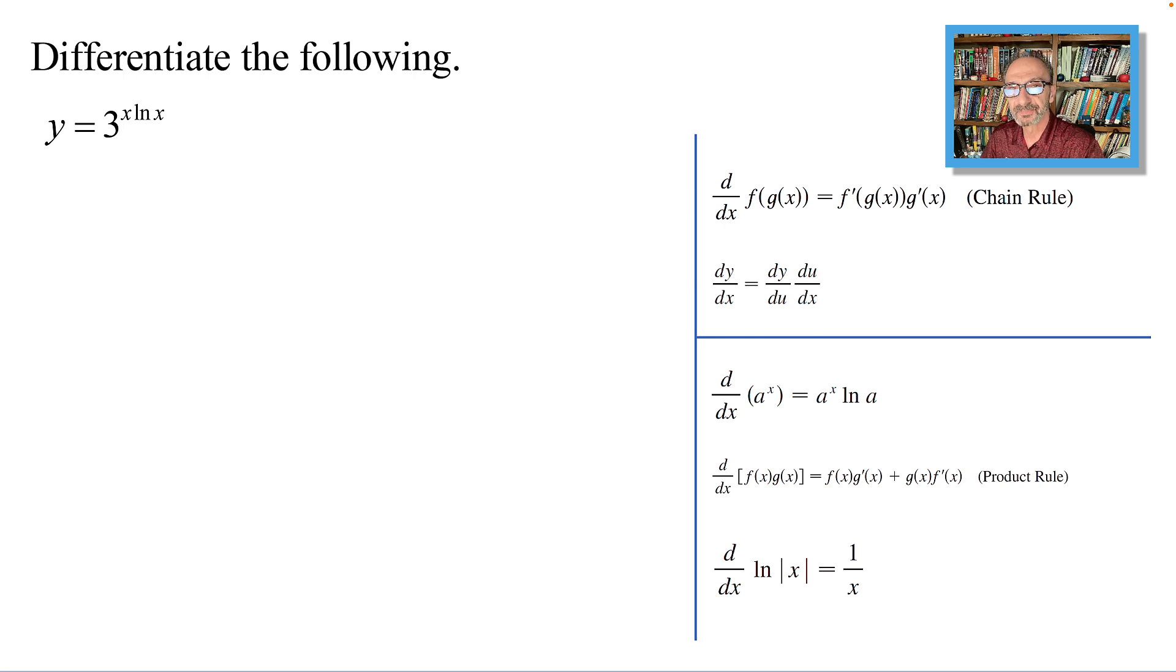Let's get started to differentiate y equals 3 to the power x ln x. In this case, it's considered as a to the u, so we need to find the derivative of a to the u, not a to the x, and use the chain rule.